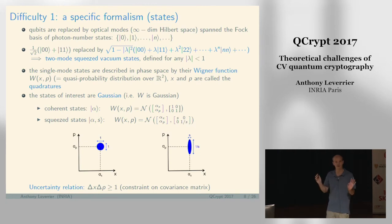This distribution is not a probability distribution because it can take negative values. This Wigner function includes all the information in your state. It's equivalent to have the density matrix or to be given this Wigner function.